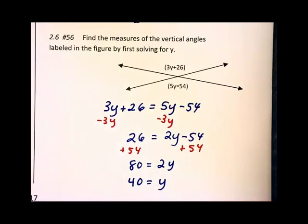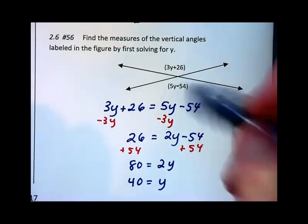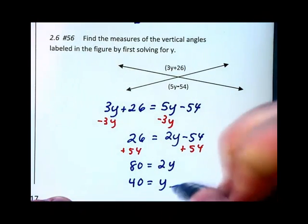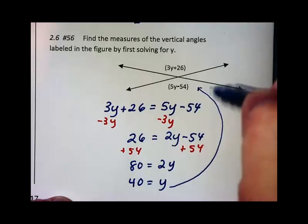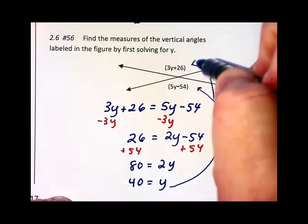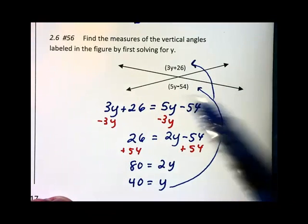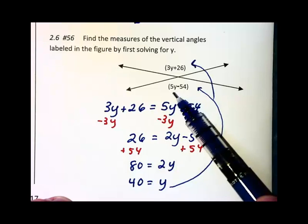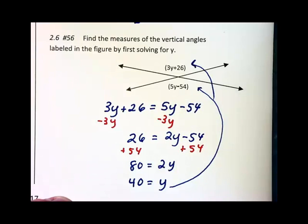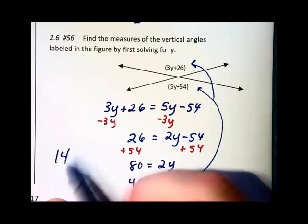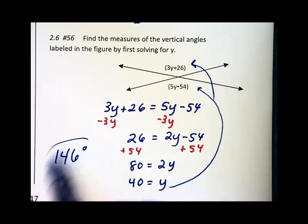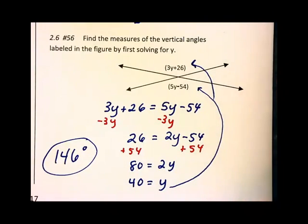Now, we were asked to do something beyond that. Find the measure of these angles. When I substitute y in, in either of these places, it's your choice. I'll choose the bottom one. 5 times 40 is 200. Take away 54. I get 146 degrees. And that will be the measure of those two vertical angles.